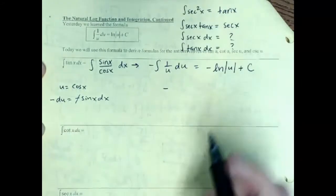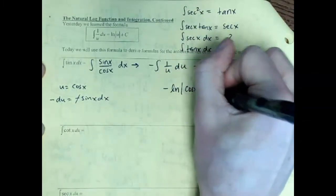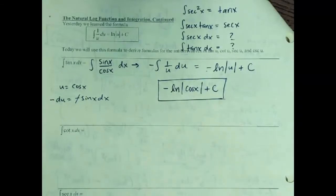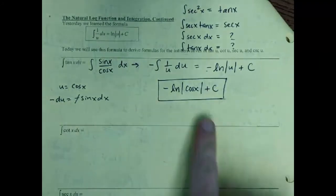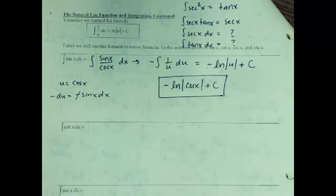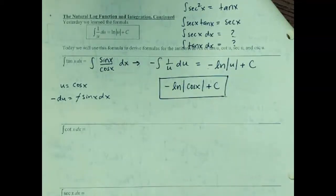Not the prettiest anti-derivative, but you can check it by taking the derivative: you'd get cosine on the bottom, negative sine goes to the top via the chain rule, the two negatives cancel, giving sine over cosine, which is tangent. So it works. A secant squared or secant tan by itself would be more straightforward — those are just working backwards from a trig derivative. But there's no trig function that simply gives you just tangent, so we get that ugly negative ln cosine.